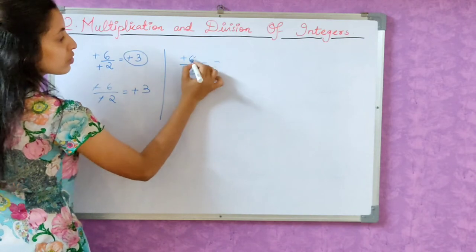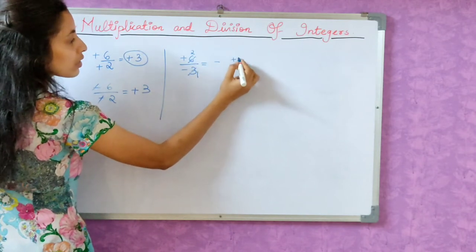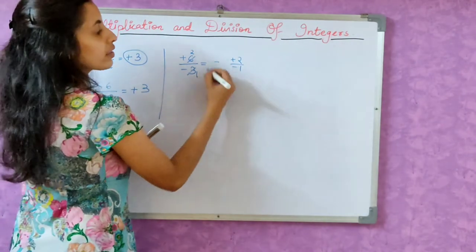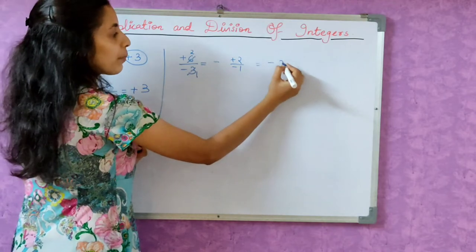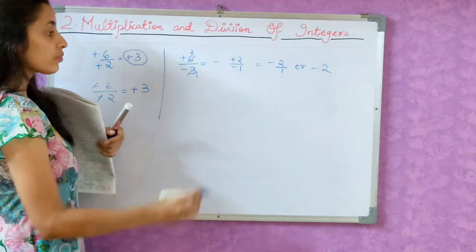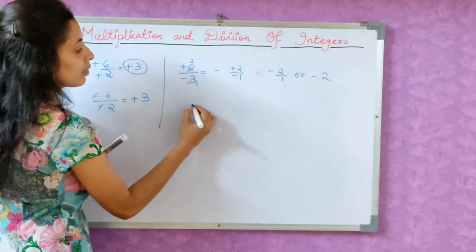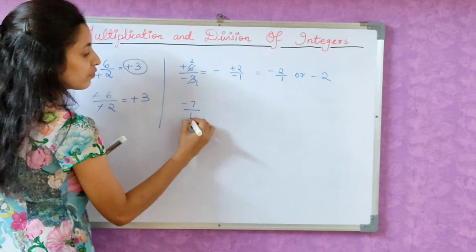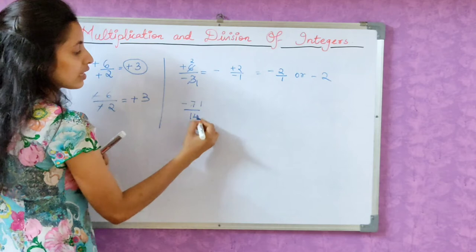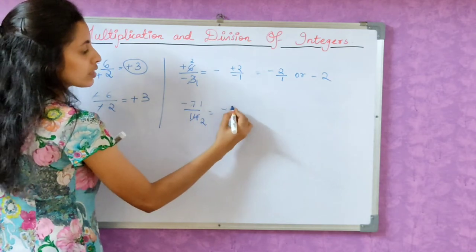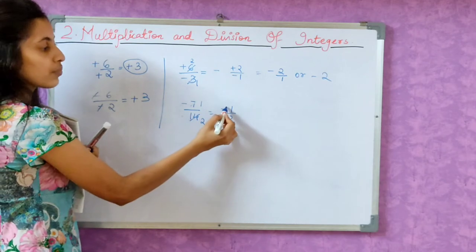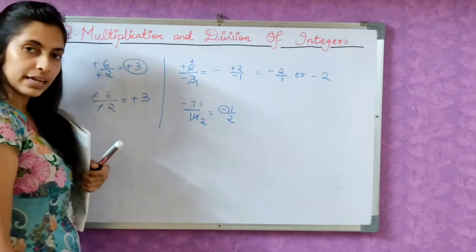And the third point: if one integer is positive and one integer is negative, then our answer will be negative. Now let's see. 3 ones are 3, 3 twos are 6. So here will be plus 2 and minus 1. We have learned that the minus sign will never be in the denominator, so the minus sign will go up. The answer will be minus 2 by 1. You can also write it as minus 2. Same applies if it's inverted. For example, minus 7 divided by 14. So 7 ones are 7, 14 twos are. It will be minus 1 by 2. If one is negative and one is positive, then the answer will always be negative.